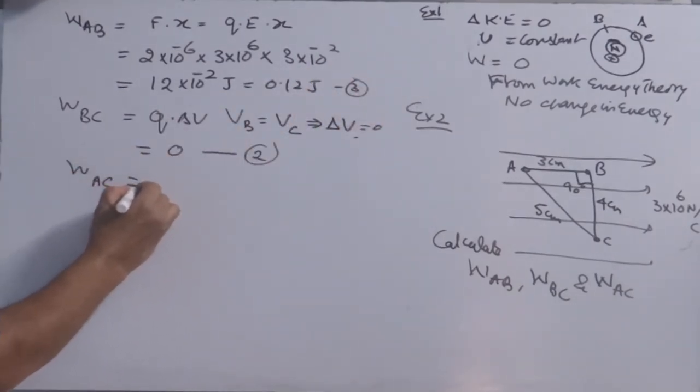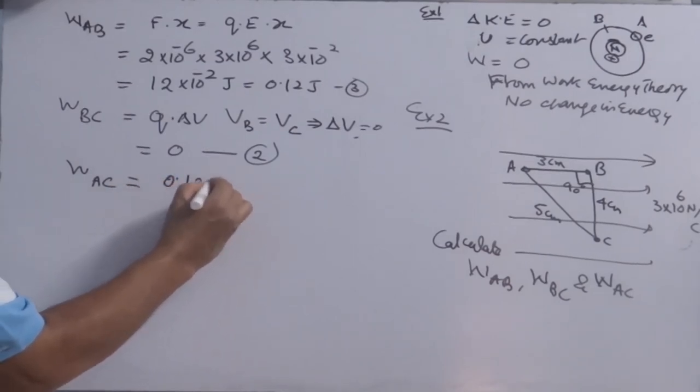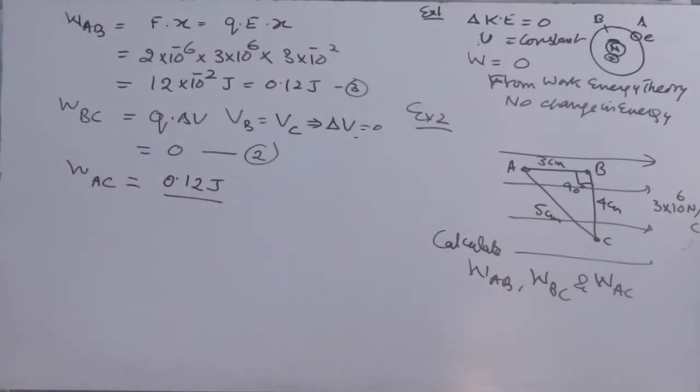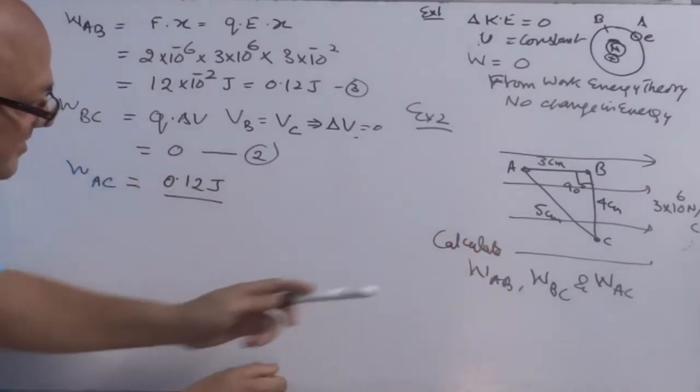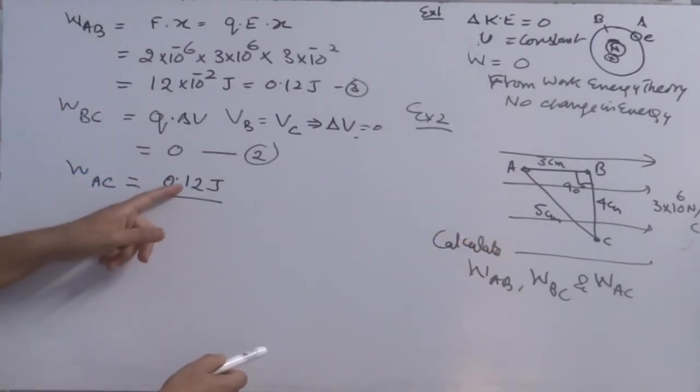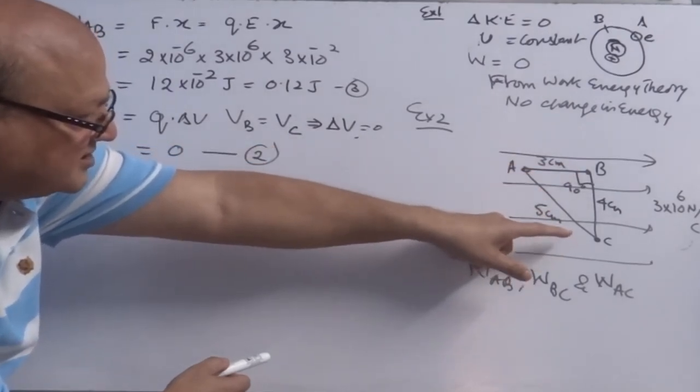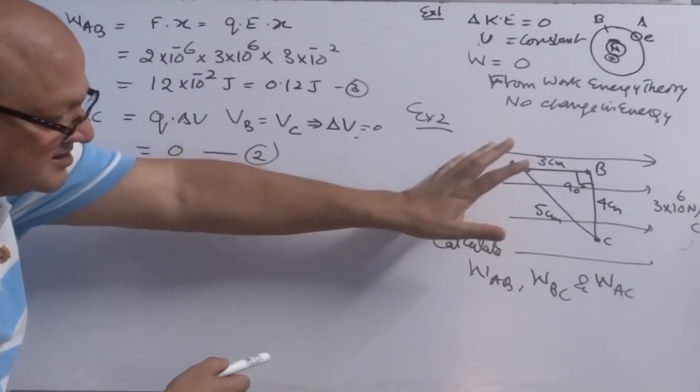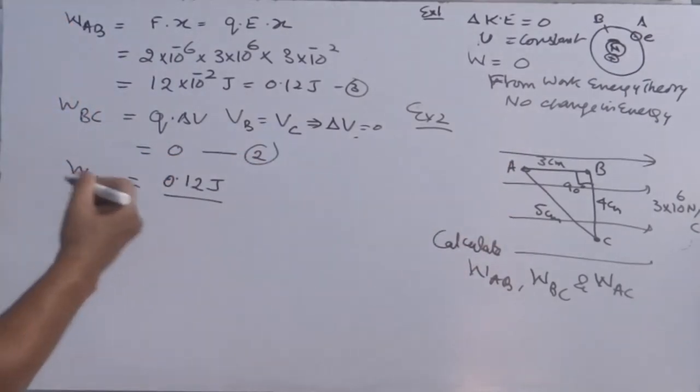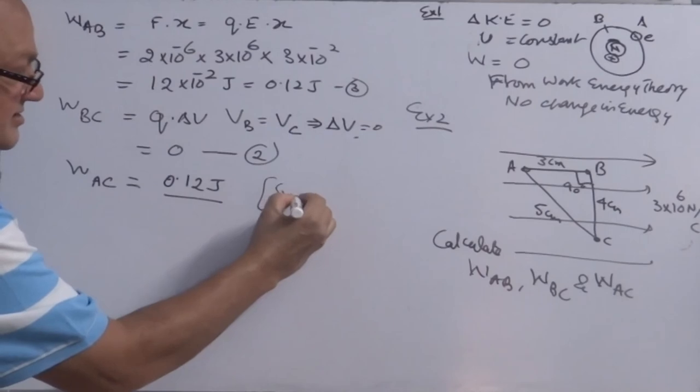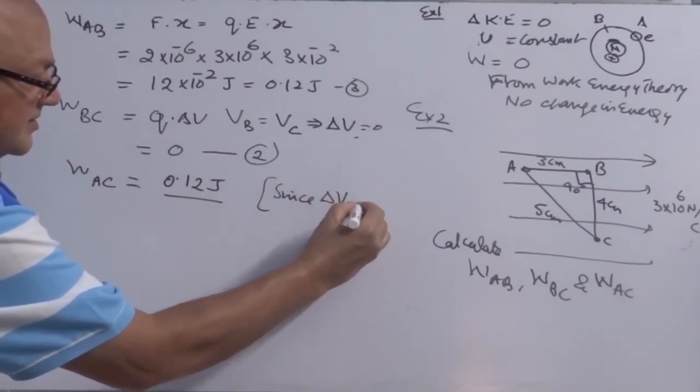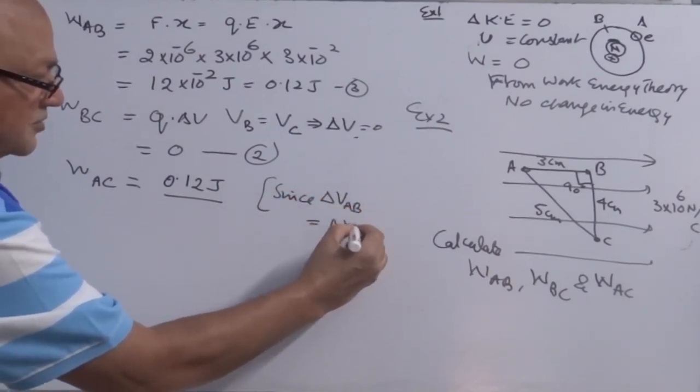From A to C, work done will be same as 0.12. This question is also asked in the board examination. How do we calculate work done from A to C is same 0.12. You see potential of point B and potential of point C are same. Potential of point A has some different value.